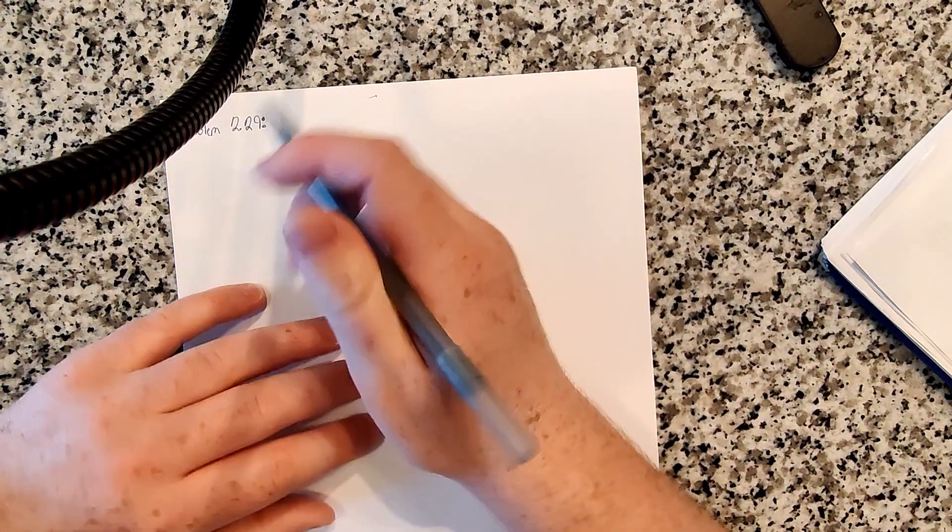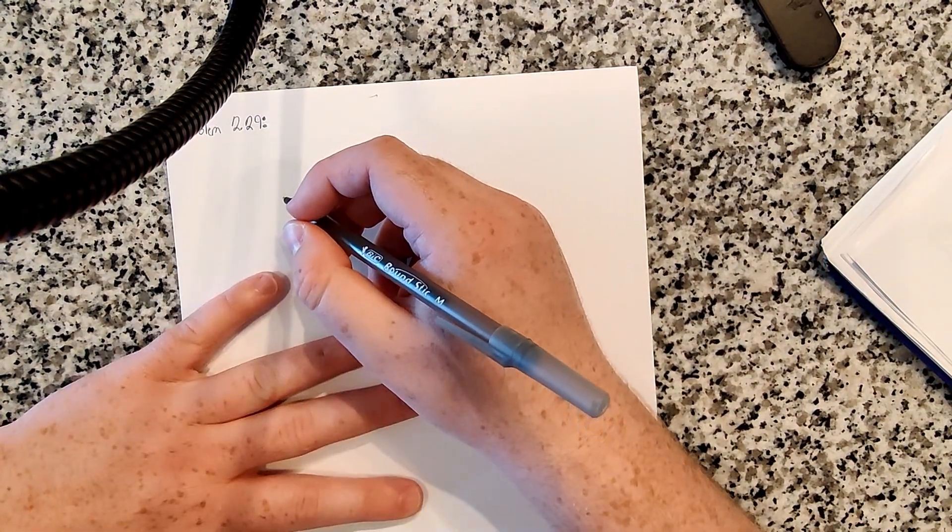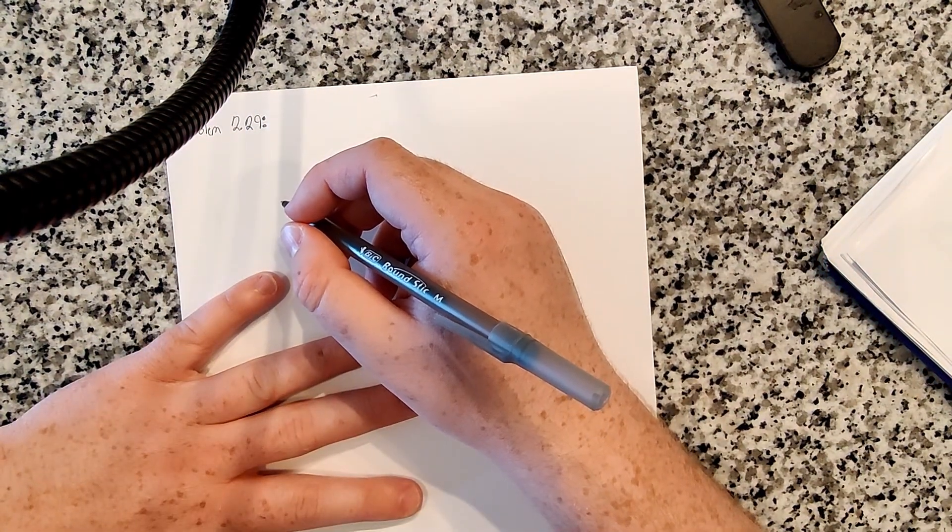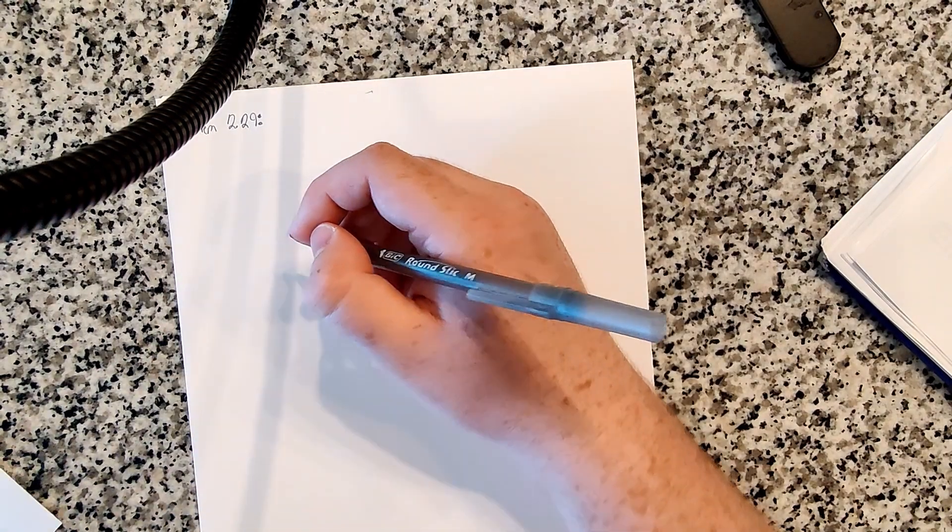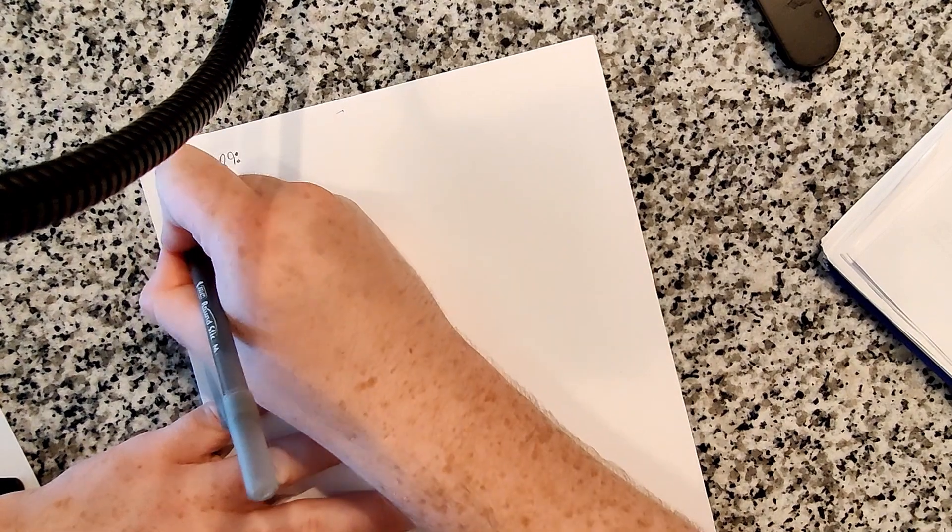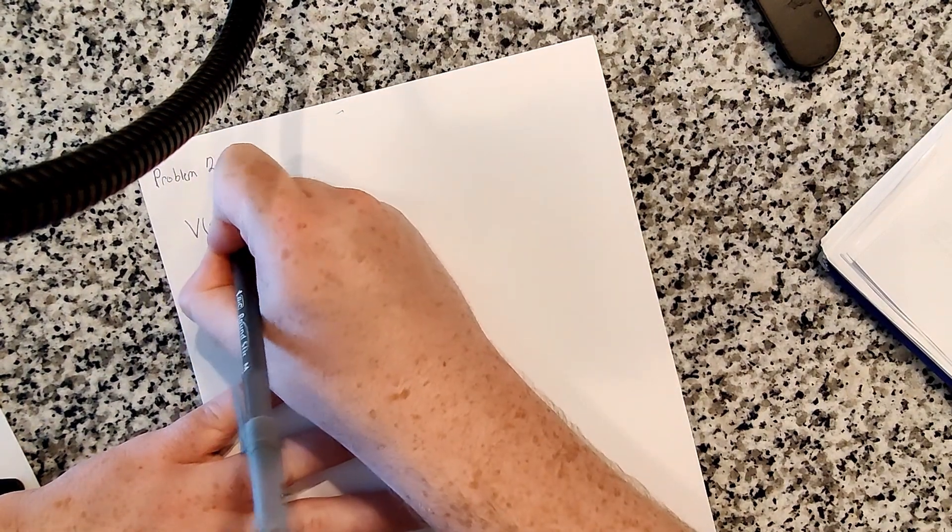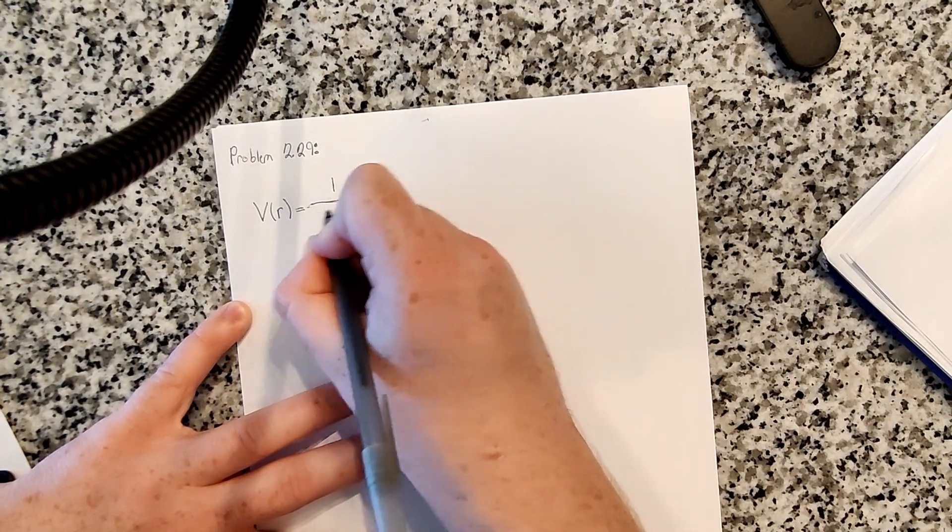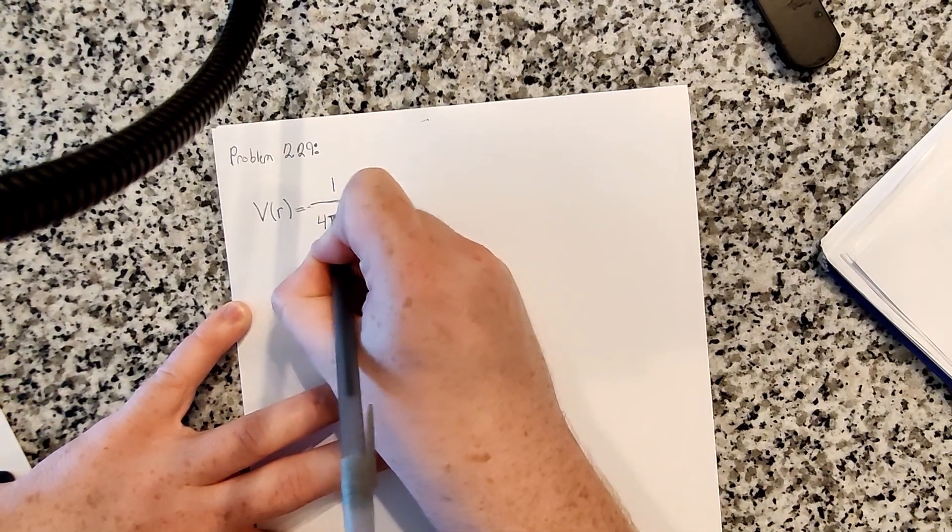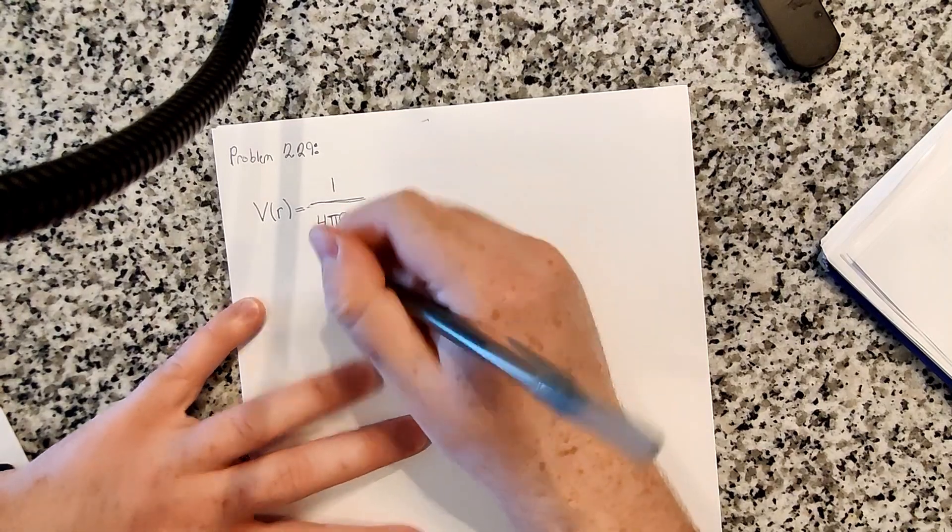So yeah, anyways, let's get started on this problem. It says to check that equation 2.29, satisfies Poisson's equation by applying the Laplacian and using equation 1.102. So real quick, equation 2.29 is this equation we've been using throughout all these videos, which is the general form of the electric potential, at least the electrostatic potential.